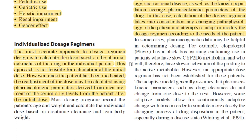The most accurate approach to dosage regimen design is to calculate the dose based on the pharmacokinetics of the drug in the individual patient — their half-life, clearance, and other PK parameters derived from plasma samples collected from that patient. This approach is not feasible for calculating the initial dose, which still uses population averages. However, once the patient has been medicated, readjustment of the dose and dosing interval can be calculated using pharmacokinetic parameters derived from measurement of serum drug levels after the initial dose.